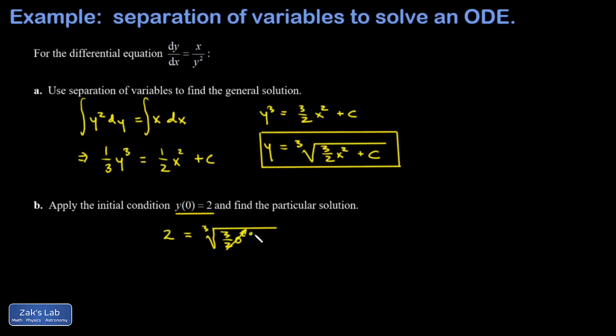That term is gone and there's a plus c inside that square root, so two is the cubed root of c. Well, that means c is equal to eight. Finally, I'll write down my particular solution.